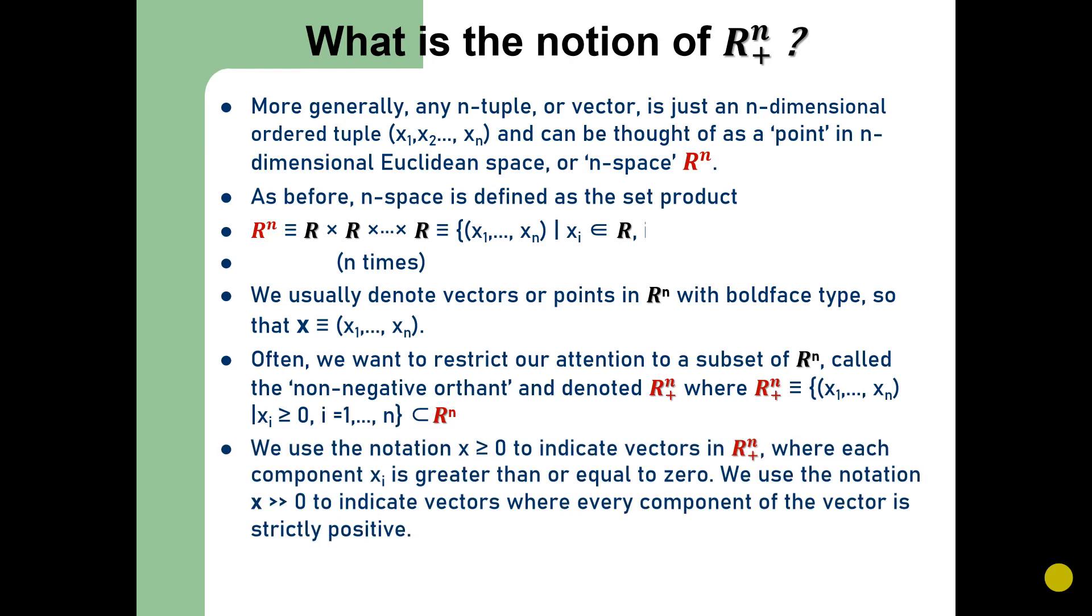We use the notation x ≥ 0 to indicate vectors in non-negative orthant R^n_+ where each component xᵢ ≥ 0, and we use the notation x > 0 to indicate vectors where every component is strictly positive.